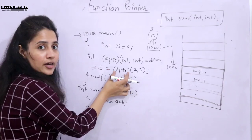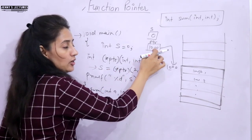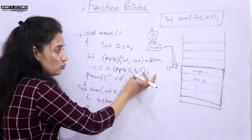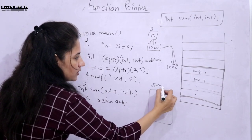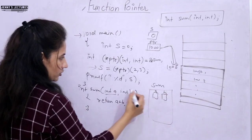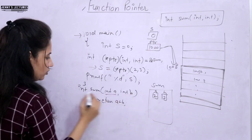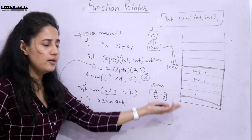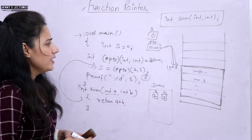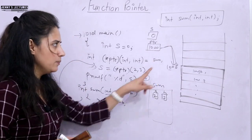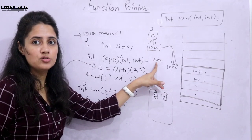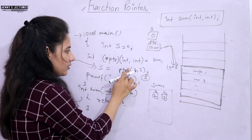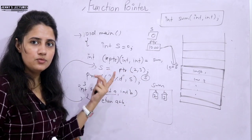When we write asterisk ptr(2, 3), we first dereference the function pointer — asterisk ptr means the value at this address, which is the code. Then we pass arguments 2 and 3. In sum, A gets 2, B gets 3, return A plus B is 5. It returns 5, which is stored in s, and it prints 5. Another way: the address-of operator and the asterisk dereference operator are optional. You can simply write ptr(2, 3) and it will also work and give you 5.